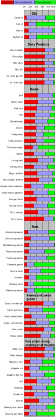Other sources include avocado oil, macadamia nut oil, grapeseed oil, ground nut oil, sesame oil, corn oil, popcorn, whole grain wheat, cereal, oatmeal, almond oil, sunflower oil, hemp oil, and tea oil camellia.